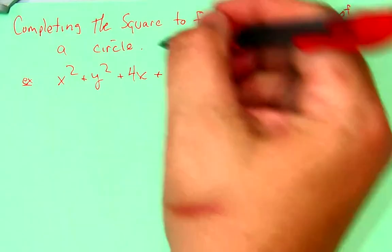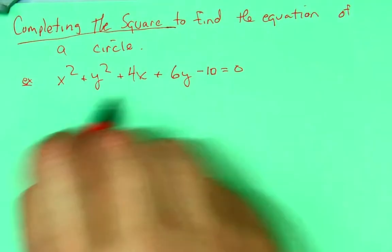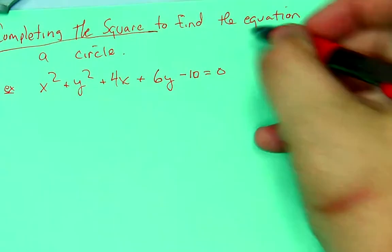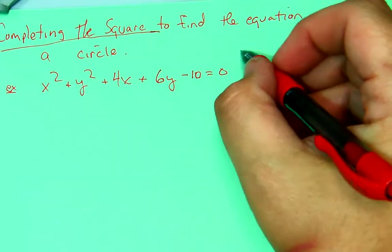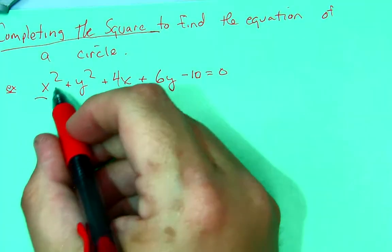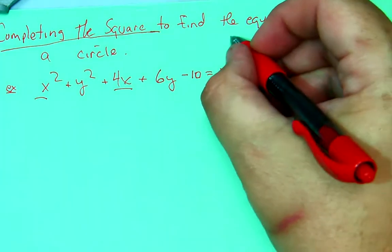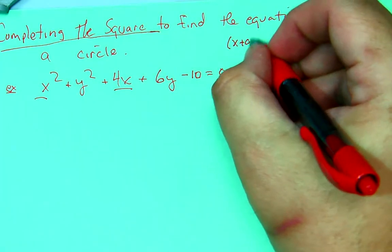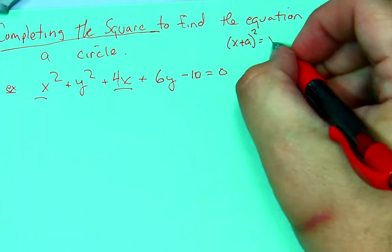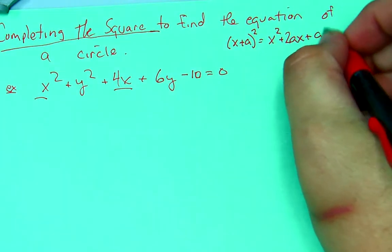So, we're going to use the idea of completing a square to solve this equation. Now, what we want to do is take these two values, x squared plus 4x, and make this into a square binomial that will look like x plus a squared, which will be equal to x squared plus 2ax plus a squared.